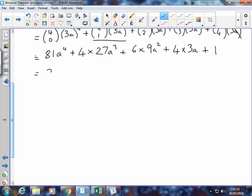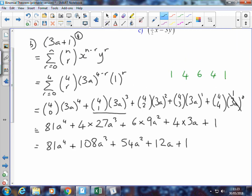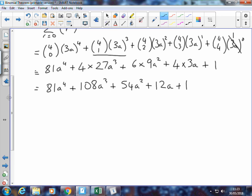And we can take one more line just to tidy it all up. 81a to the power of 4, 4 multiplied by 27 is 108a cubed. That's 6 times 9, 54a squared. 4 times 3a, 12a plus 1. And check, we've got our 5 terms: 1, 2, 3, 4, 5. So the expansion of 3a plus 1 to the power of 4 is 81a to the 4 plus 108a cubed plus 54a squared plus 12a plus 1. I think I'll celebrate with an underline. There we go. Thank you.